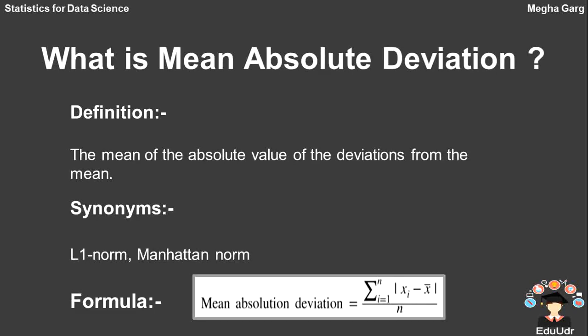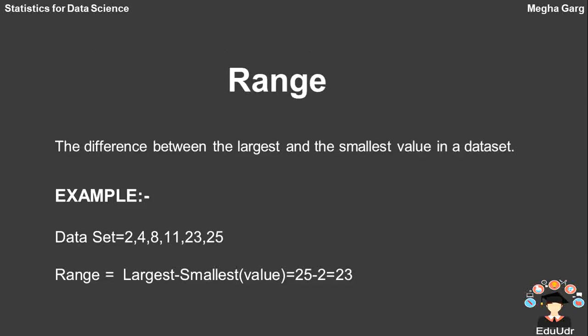Now, what is mean absolute deviation? It is the mean of the absolute values of the deviations from the mean. Its synonym is L1 norm. The formula is shown on your screen.